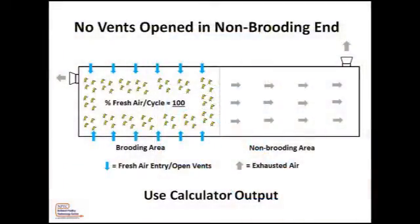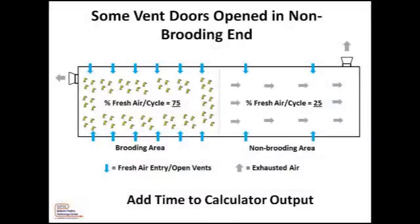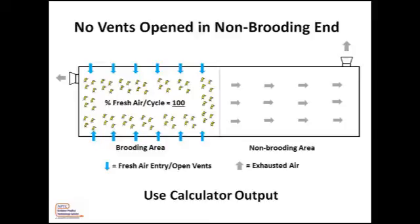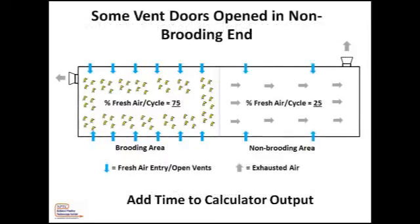This calculator is designed to estimate fan runtimes based on brooding setups where 100% of the incoming fresh air enters the building through the brooding end of the house and directly benefits the chicks. Air that enters through open vent doors in the non-brooding end and bypasses the chicks does not count in this calculation. Most growers that have success with this calculator shut every other vent door in the brooding end and all vent doors in the non-brooding end at placement. If you leave vent doors open in the non-brooding end, you can still use this calculator, but additional runtime must be added.